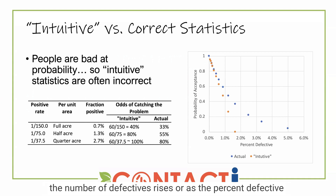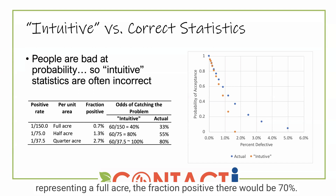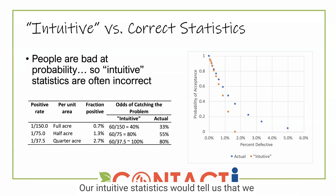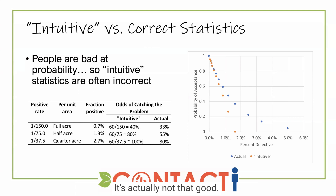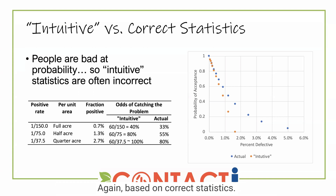But as the percent defective rises, the curves depart from each other significantly. So let's again imagine a positive rate of one in 150 samples representing a full acre — the fraction positive there would be 0.7 percent. Our intuitive statistics would tell us that we have a 40 percent chance of catching the problem. It's actually not that good; it's only about a 33 percent chance of catching that problem, based on correct statistics.